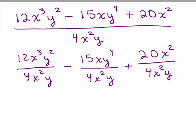Now we're back to canceling as much as we can. You could use the laws of exponents here, or you could completely factor everything out. So I can cancel the 12 and the 4, that gives you a 3. With x cubed over x squared, subtracting exponents, you end up with an x at the top. And y squared over y gives you a y. So for this first term it all canceled out and we got 3xy.